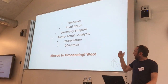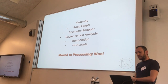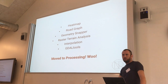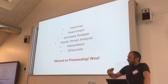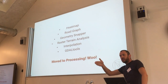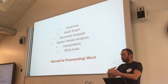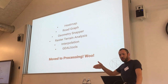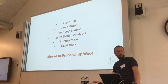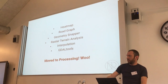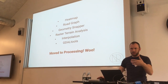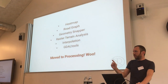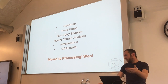A lot of other plugins - heat map, road graph, geometry snapper, raster terrain analysis, interpolation, and GDAL tools - have been taken away from the 'installed by default but not enabled by default' approach to actually becoming processing algorithms. This is actually a really good thing, because instead of being dead-end tools where you run a heat map manually and get your end result but can't use it as part of a bigger model, now that they're in processing they can be used in models and by other plugins. When you install QGIS 3.0, you won't see the heat map plugin listed anymore - it's part of processing and available to everyone.